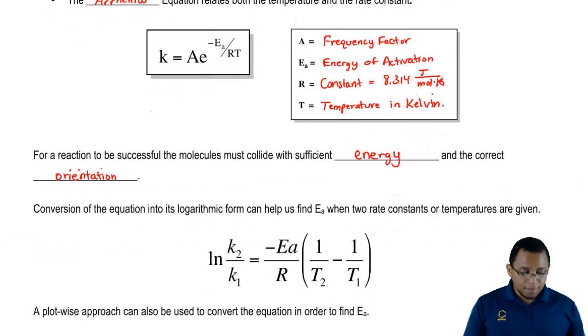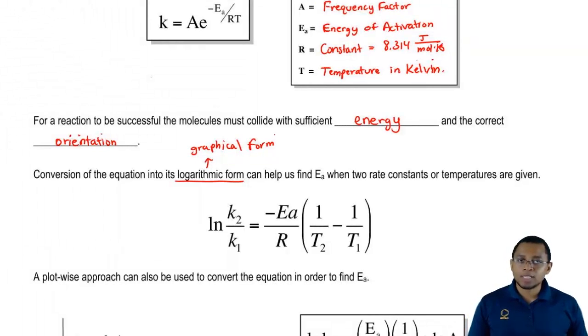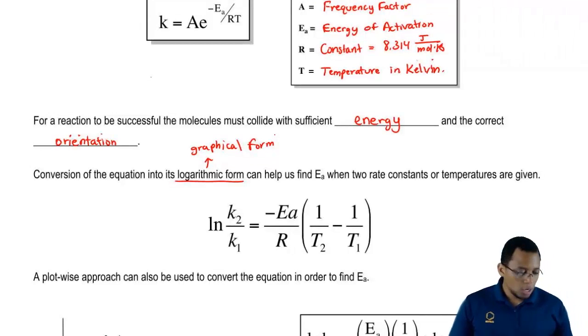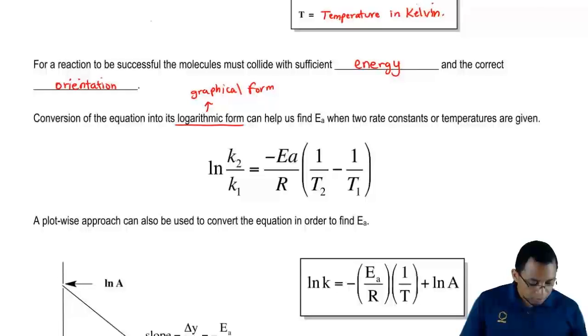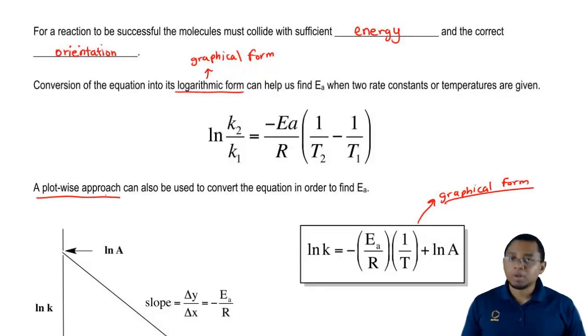We can convert the Arrhenius equation so that it gets a logarithmic form, also called the graphical form sometimes. If we have a plot or graph of something and we're trying to relate the Arrhenius equation to it, we usually will use this graphical form, also known as the plot-wise approach to the Arrhenius equation.